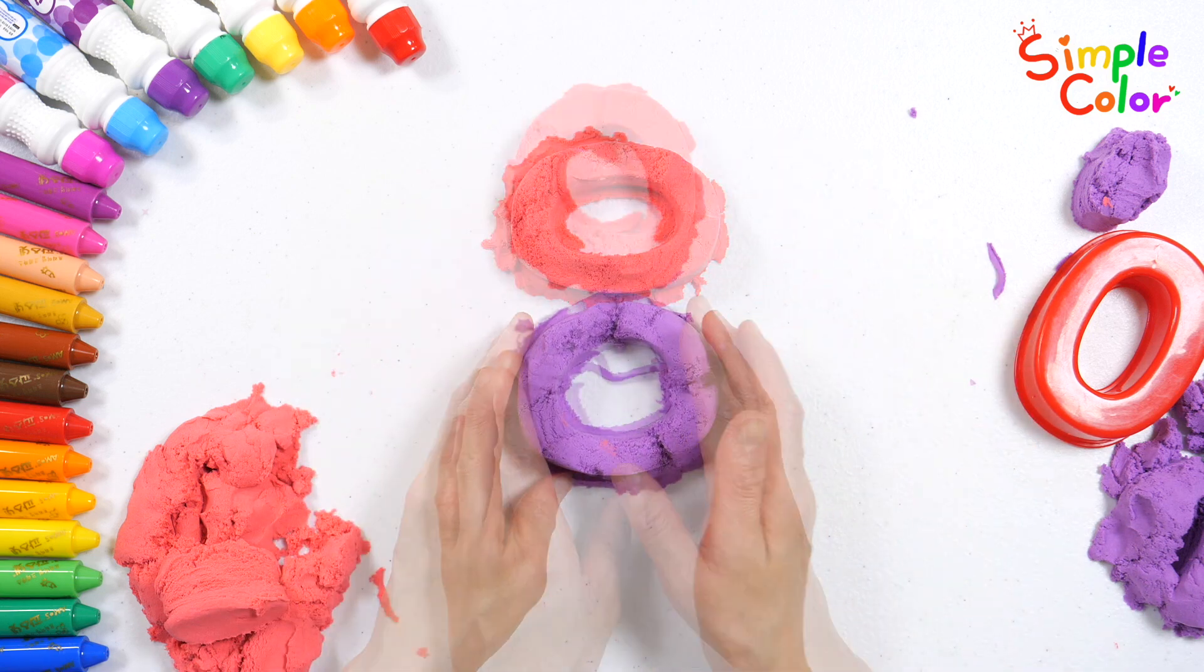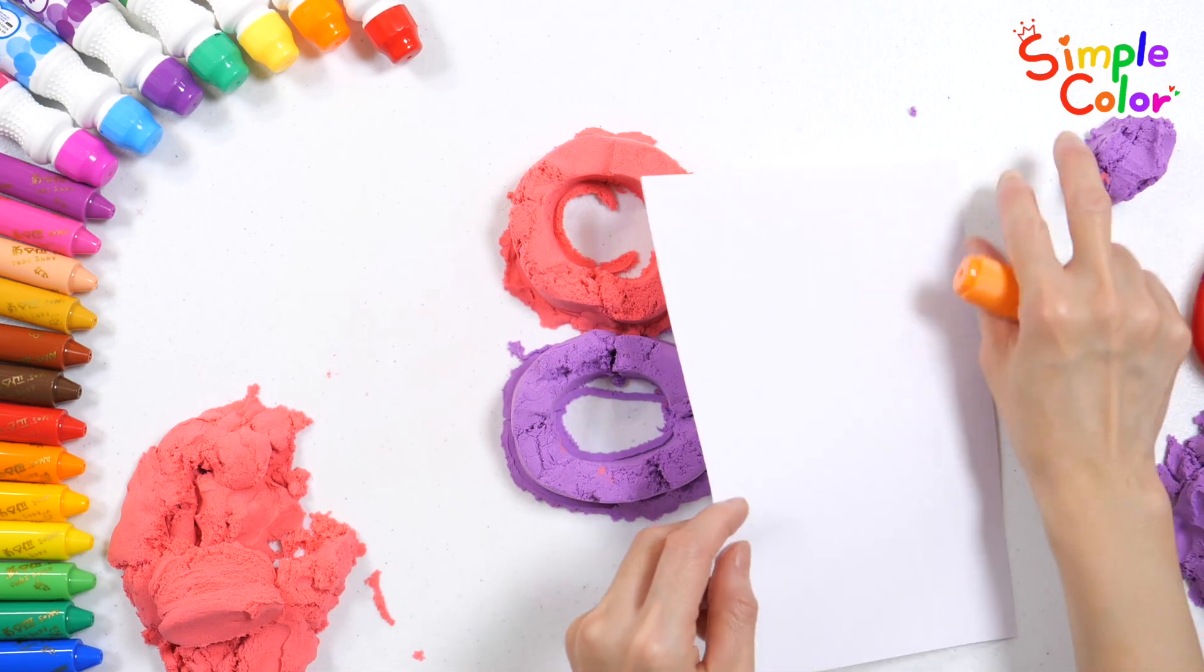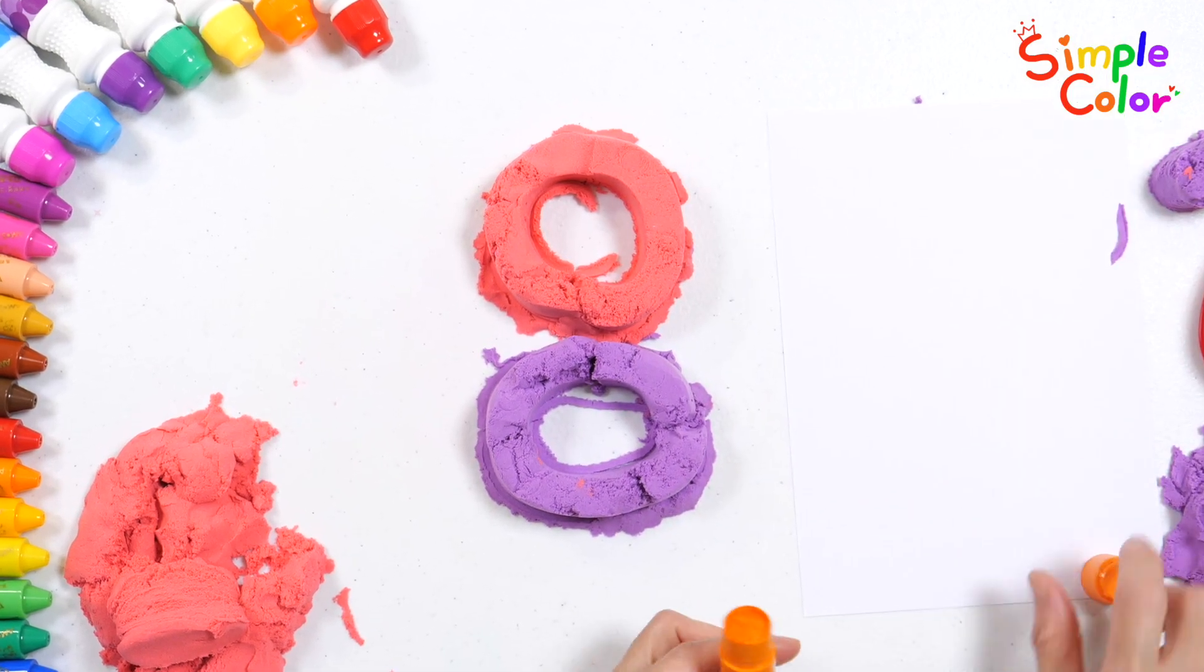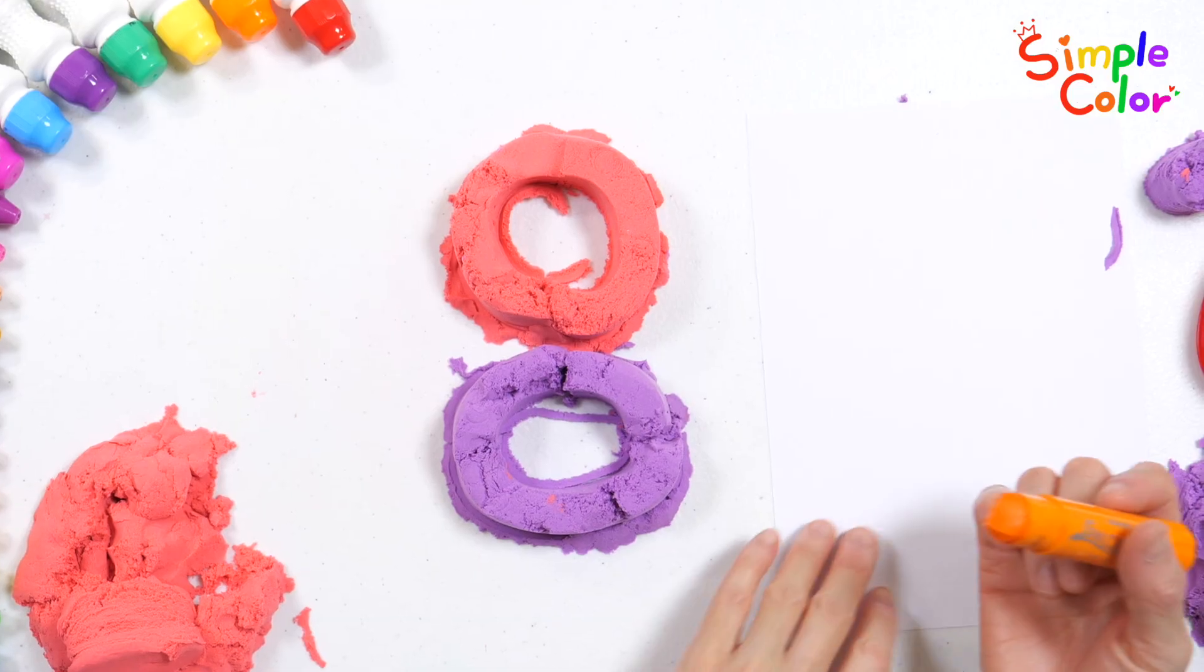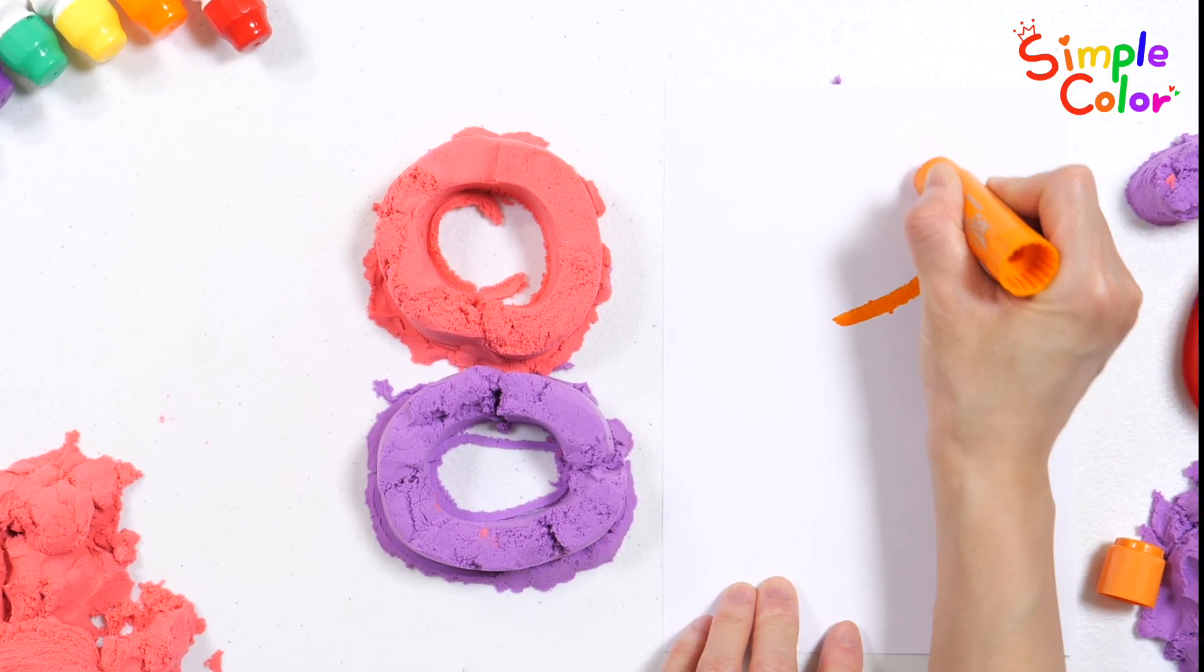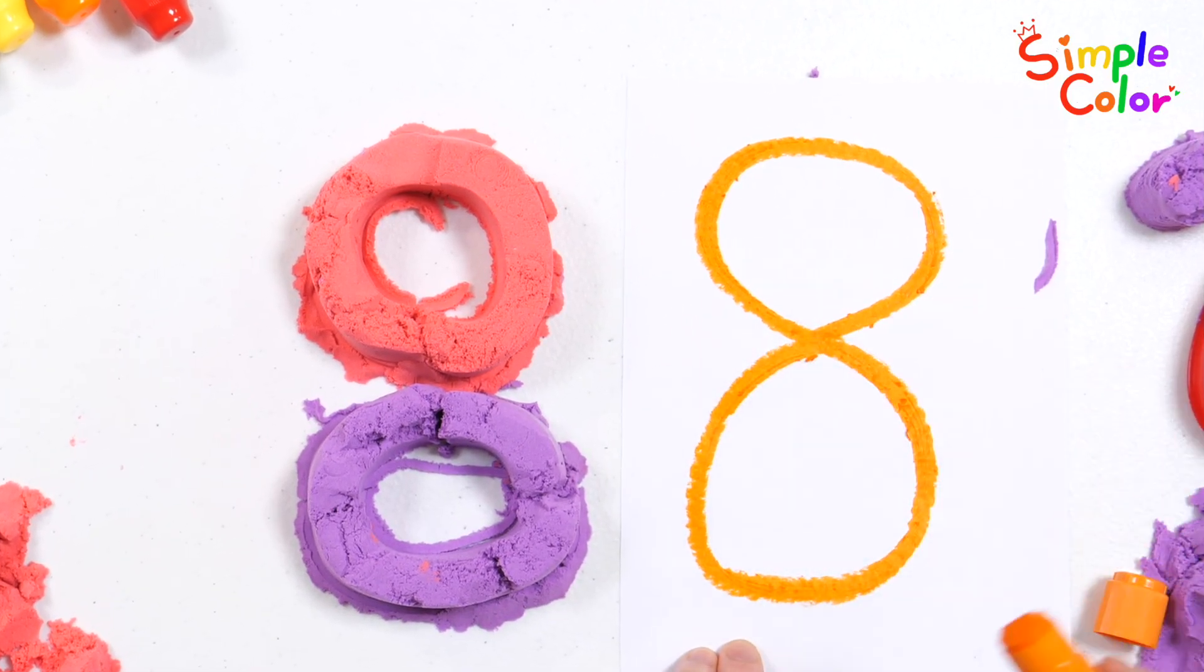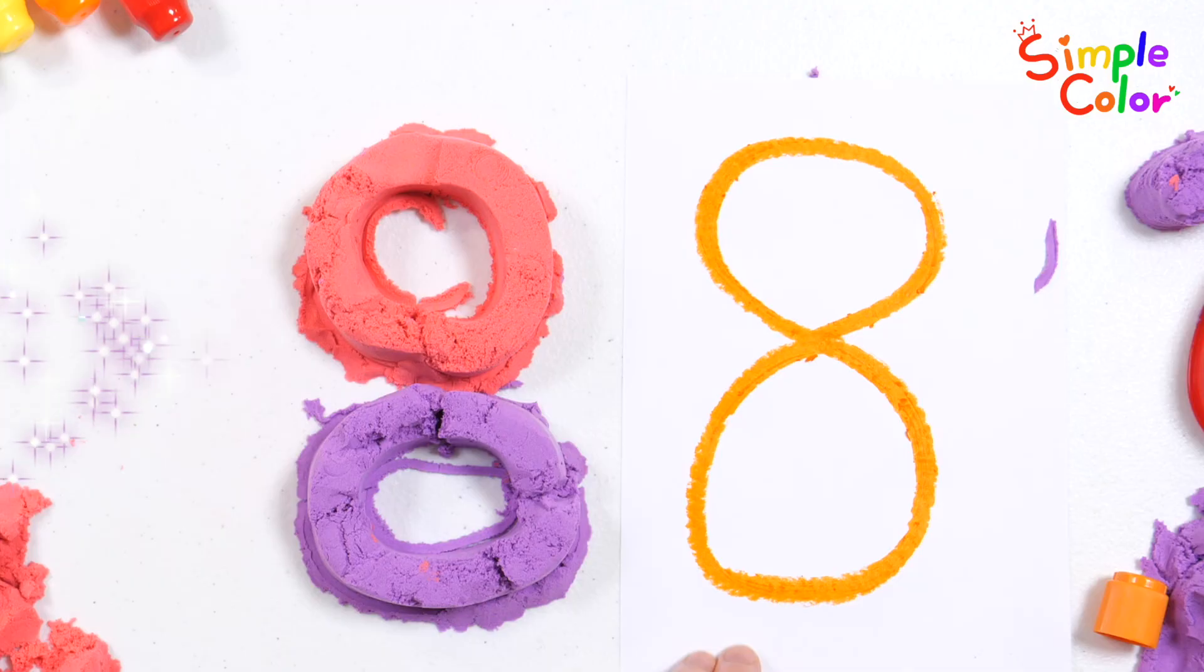We joined the two round shapes and made the number eight. Let's write the number eight with a crayon. Now we know the numbers well. Let's go tell our friends. Eight! Good job! Thank you.